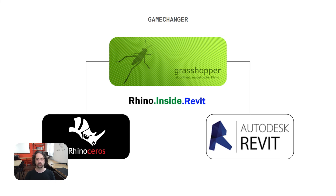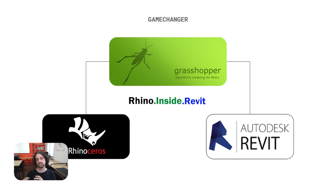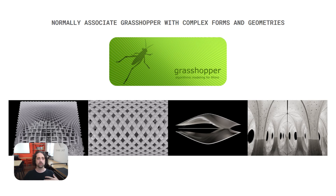All of those workflows and automations that we were previously using Dynamo for we can now start integrating into Grasshopper. This is still in development — Dynamo has been around a long time, so all of those tools and automations will need to be rebuilt in a Grasshopper environment using Rhino Inside as the link between Rhino and Revit. But this is the process I see happening over the next few years: Dynamo's utility is slowly going to get replaced by a fully Grasshopper-connected workflow.